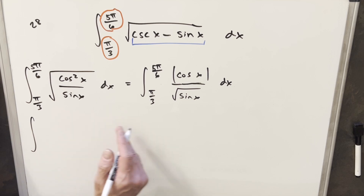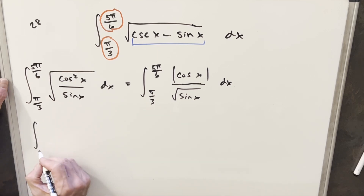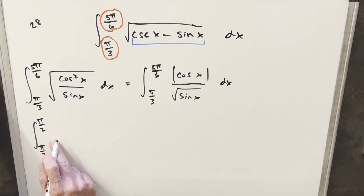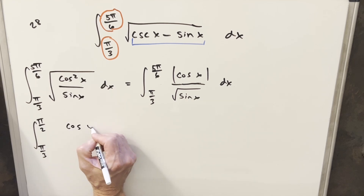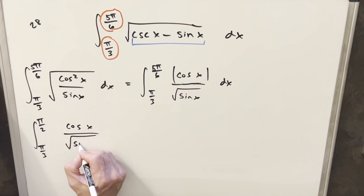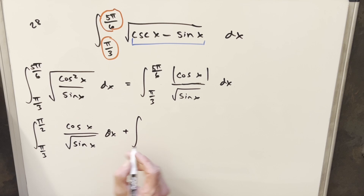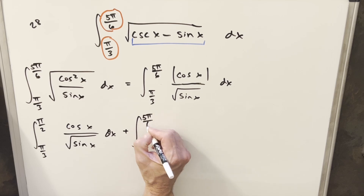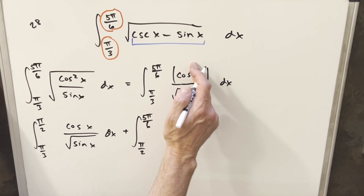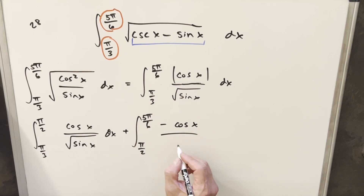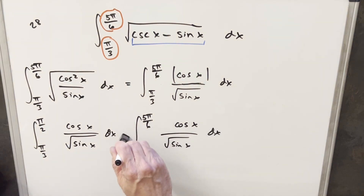Since keeping the absolute value makes integration awkward, I'm going to break this into two regions covering the first and second quadrants. The first integral goes from π/3 to π/2: in the first quadrant cosine is always positive, so we can drop the absolute value and write cosine x over square root of sine x dx. The second integral goes from π/2 to 5π/6. In the second quadrant cosine is always negative, so we handle the absolute value by reversing the sign, giving minus cosine x over square root of sine x, with the minus sign pulled in front of the integral.